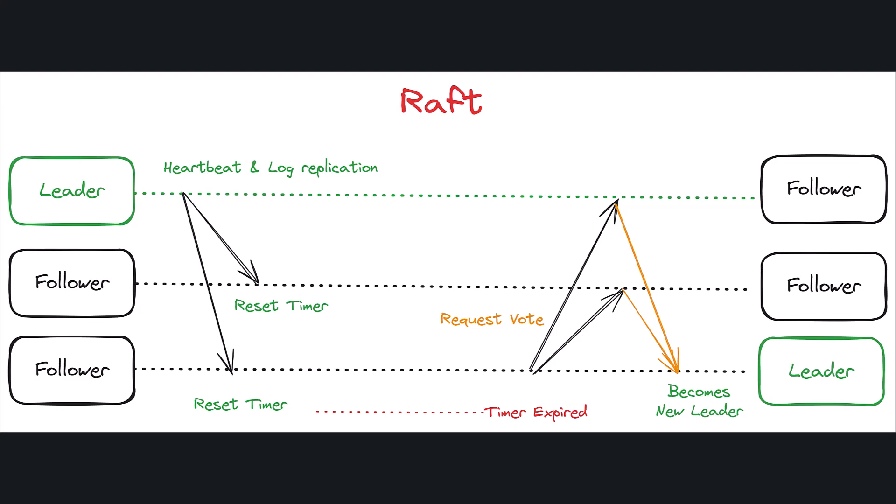We will discuss the Raft protocol. It is a consensus algorithm which is mainly used as an alternative to Paxos. While Paxos is more complex, Raft is a bit simpler.